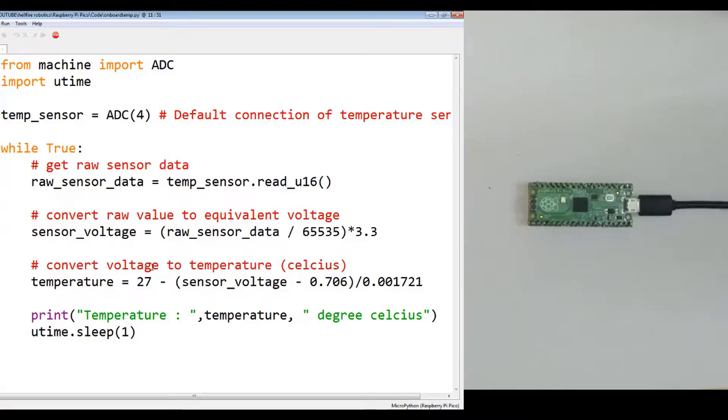Now you have to convert the voltage to temperature in degree Celsius. This equation is given by the Raspberry Pi board, that is the original equipment manufacturer. You have to use this as it is given in the specifications. You have to take the sensor voltage.